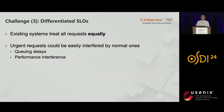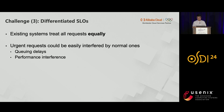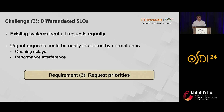A third challenge is to satisfy different latency SLOs of requests. Existing systems treat all requests equally, where urgent requests could easily be interfered by normal ones — they may experience excessive queuing delays or performance interference when co-located with normal requests. So we also need request priorities to systematically differentiate their SLOs.